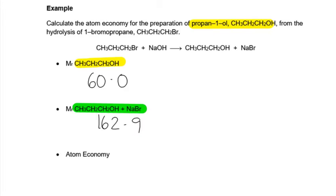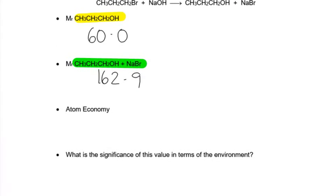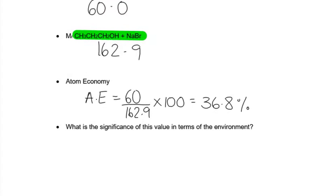If you've done that you should have got these numbers and therefore the atom economy is 60, the one we want over all of them, times 100%. So this is just over a third, 36.8%. What that means is that there's an awful lot of waste.